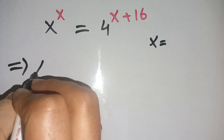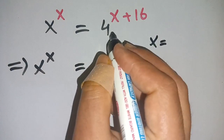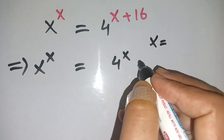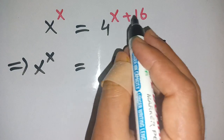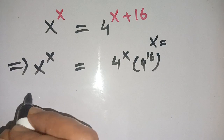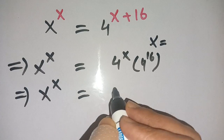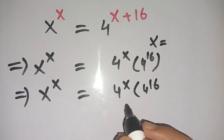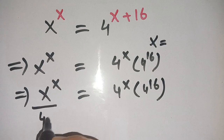We can write this as x^x = 4^(x+16). This can be written as 4^x times 4^16, using the rule that a^(n+m) = a^n times a^m. So we have x^x = 4^x times 4^16.